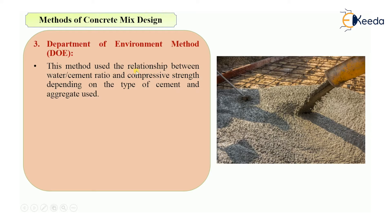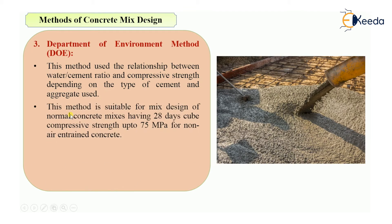This method uses the relationship between water-cement ratio and compressive strength, depending upon the type of cement and aggregate used. The compressive strength of concrete will depend on the type of cement and aggregate, and the method gives a relationship between the water-cement ratio and the resulting compressive strength. This method is suitable for the mix design of normal concrete mixes having 28-day cube compressive strength up to 75 MPa (75 N/mm²) for non-air-entrained concrete.